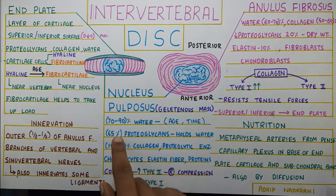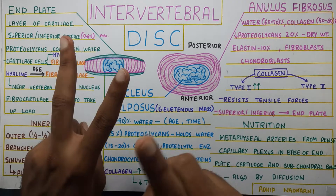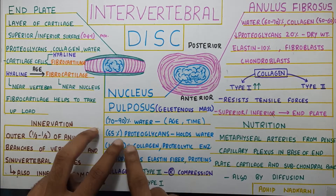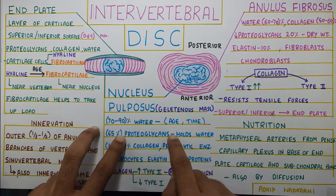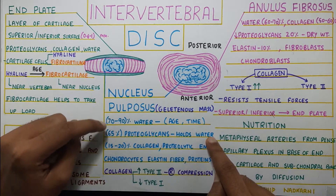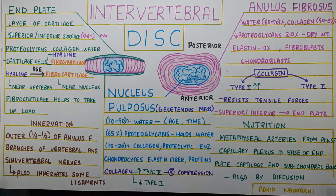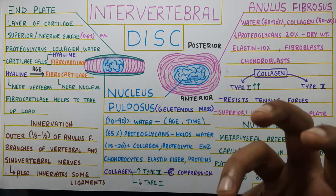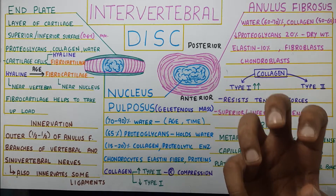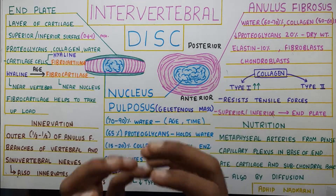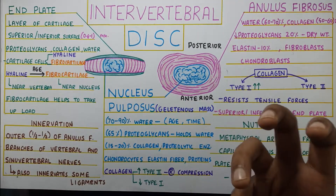65 percent of the nucleus pulposus is proteoglycans. This is the second important component — proteoglycans, also called PG, have the ability to retain water, and this is a key factor for shock absorption present in the disc.